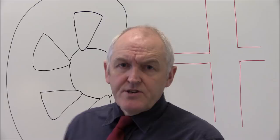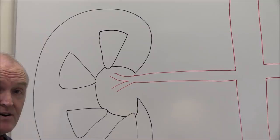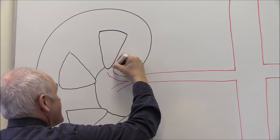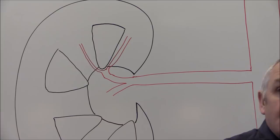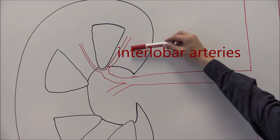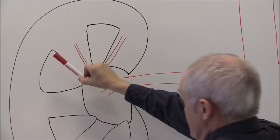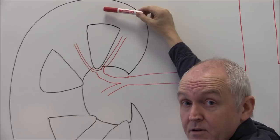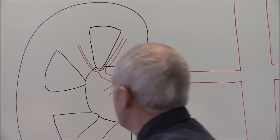The renal artery divides into segmental arteries, carrying blood off to segments of the kidney. The segmental artery will then divide, and smaller arteries will carry the blood through the individual renal columns — the cortical columns. These are the interlobar arteries. One lobe of a kidney would be one renal pyramid and the cortex above that renal pyramid, so these are interlobar arteries carrying blood up that way.